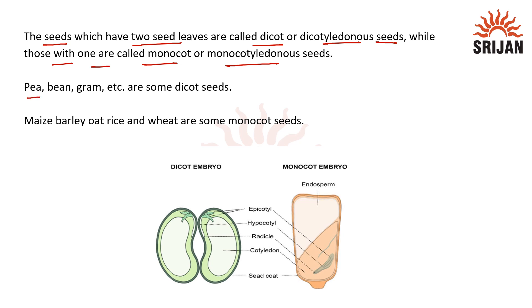Pea, bean, and gram are examples of dicot seeds, whereas maize, barley, oat, rice and wheat are examples of monocot seeds.